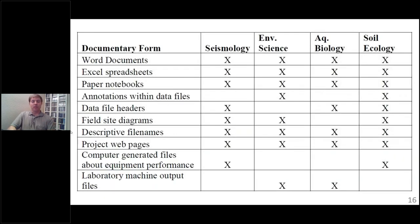There's probably typically very little formal metadata generation if you think of metadata as structured XML files or standardized files. But there are lots of documentary forms being used — Word documents, Excel spreadsheets, notebooks, annotations, file headers, diagrams, file names, web pages, and computer-generated files from equipment. You often see this patchwork of documentation. Rarely is it one big linear file covering all details — it's a patchwork that many people work on together in team contexts to ensure they're able to use data.